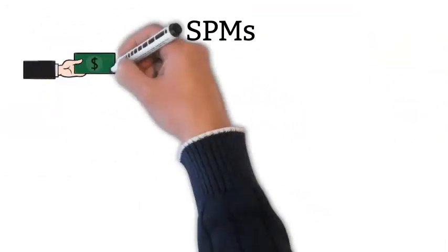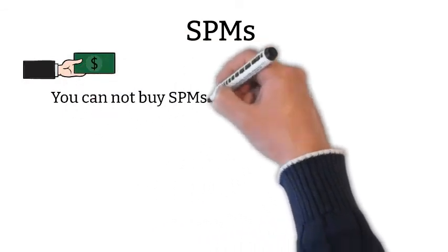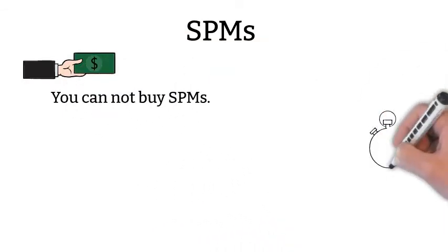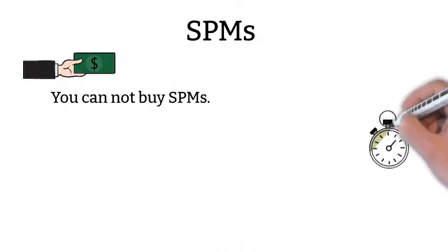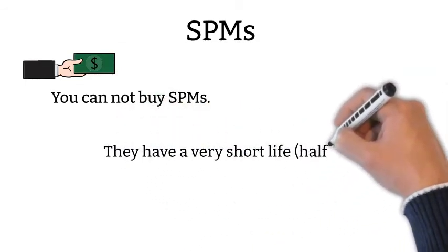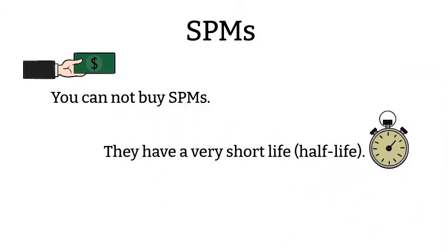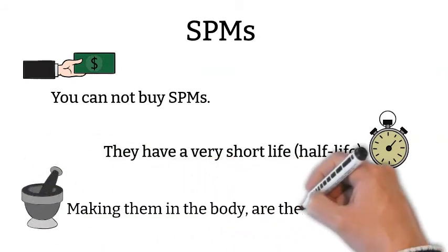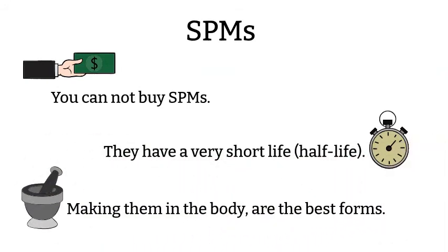You cannot buy SPMs, as some companies would make you believe. The reason for this is that naturally-made SPMs in the human body have a very short half-life — meaning how long they last in the body. Making them in the human body is the best form, which is done by consuming butyrate or naturally generating butyrate.